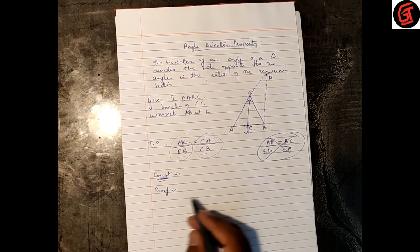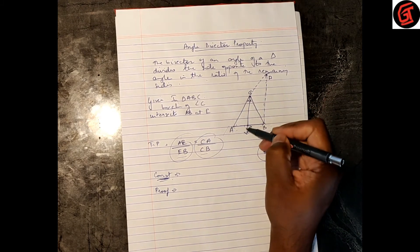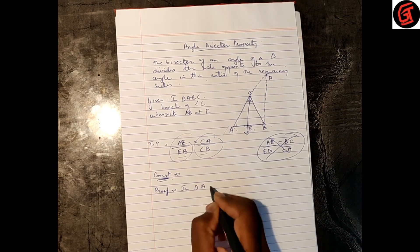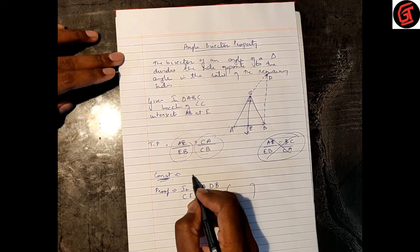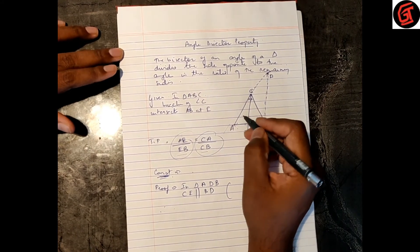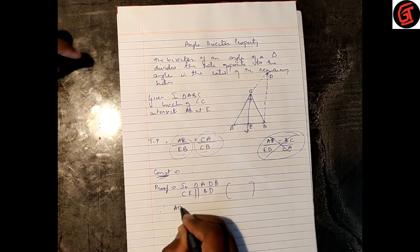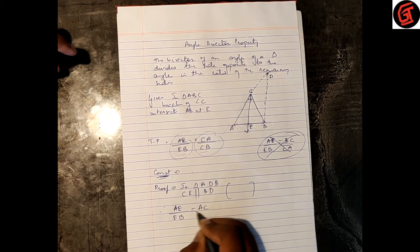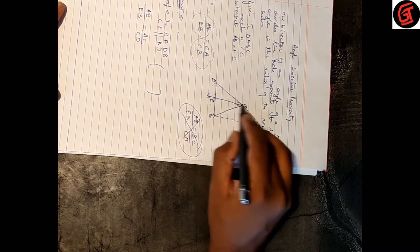Now the proof. In triangle ADB, we know CE is parallel to BD by construction. Therefore, by the Basic Proportionality Theorem, since CE is parallel to BD and intersects the two sides at distinct points, AE upon EB is equal to AC upon CD.